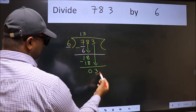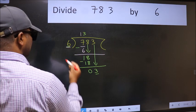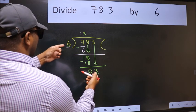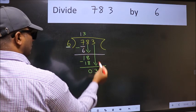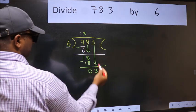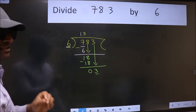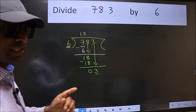Here we have 3 and here 6. 3 is smaller than 6. So what many do is they directly put dot, take 0, which is wrong.